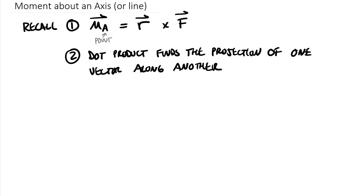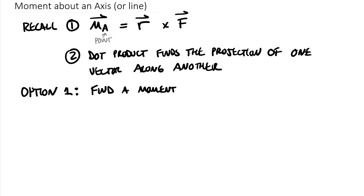So if our vector of interest is a moment vector, we can dot that moment vector onto a line and come up with a moment along that line. There are two options for doing these computations. Option one takes advantage of tools we've already used. The first step is to find a moment around a point on the line — and it technically doesn't matter what point you pick, just pick any point along your line of interest.